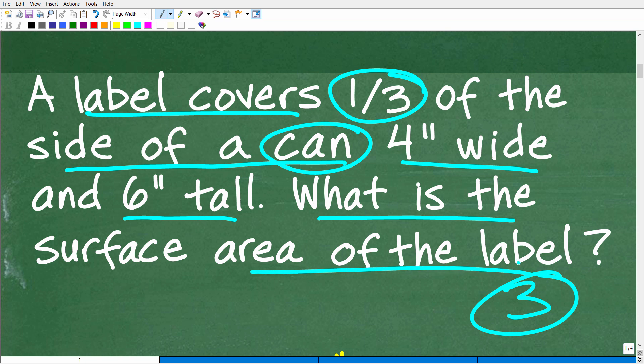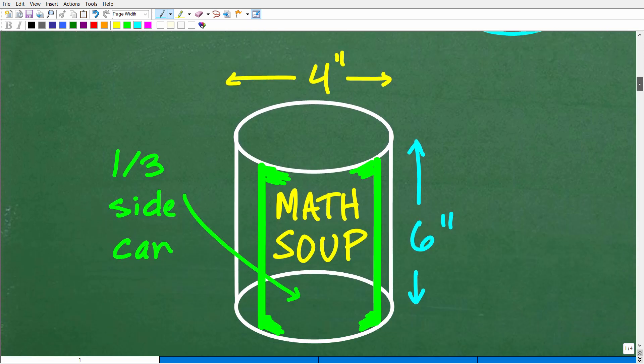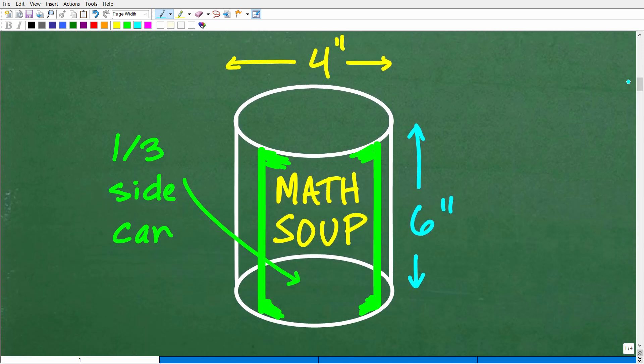All right. So we want to know what the surface area of this label is. So once we understand the problem, it's a good idea to model this problem visually. And of course we can come up with a lovely sketch. So here is my sketch and I'm going to call my food here, math soup.